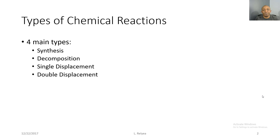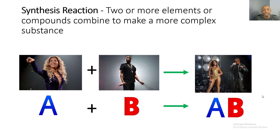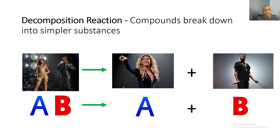First up is a synthesis reaction, which is when you have two or more elements or compounds combined to make a more complex substance. For example, we have Beyoncé plus Jay-Z and they combine together to make a more complex substance. I like to tell my students this is kind of like a marriage. So if you look at the bottom, our reactants are A plus B and they yield AB in a synthesis reaction.